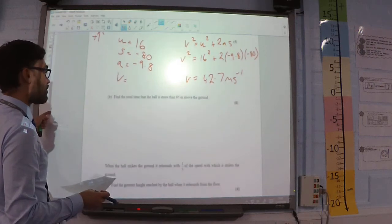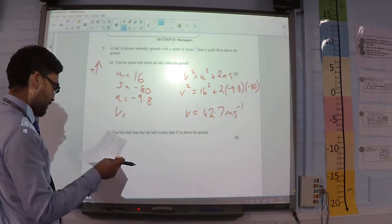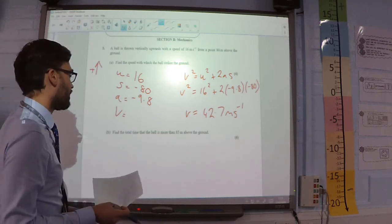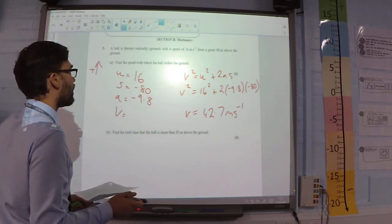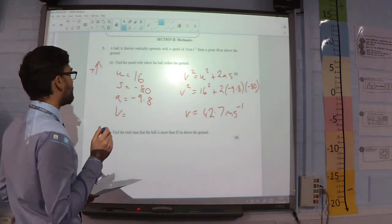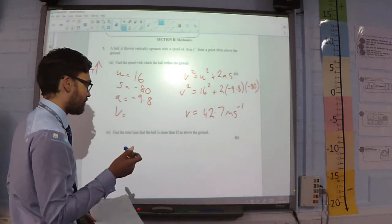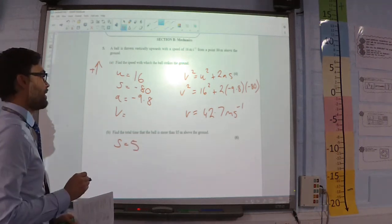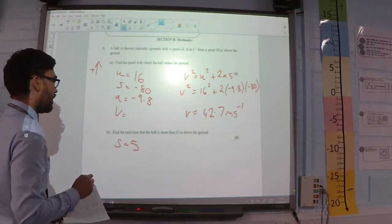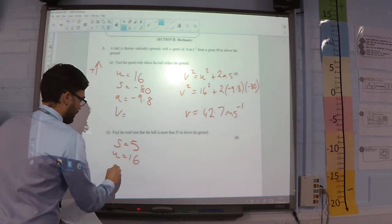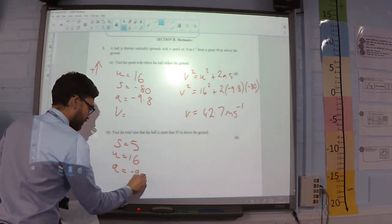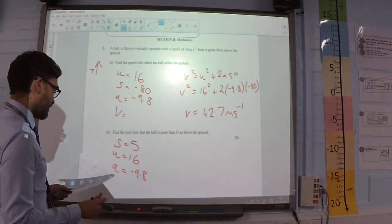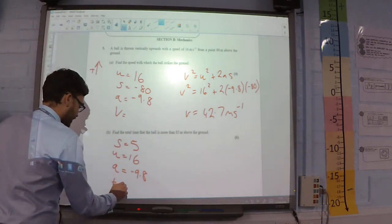Part B, find the total time the ball is more than 85 meters above the ground. So, here, I start 80 meters above the ground. I'm 85 meters above the ground. My displacement in that case is going to be positive 5. I still have the same initial velocity which is 16. I still have the same acceleration which is negative 9.8. And here, I'm trying to find time.